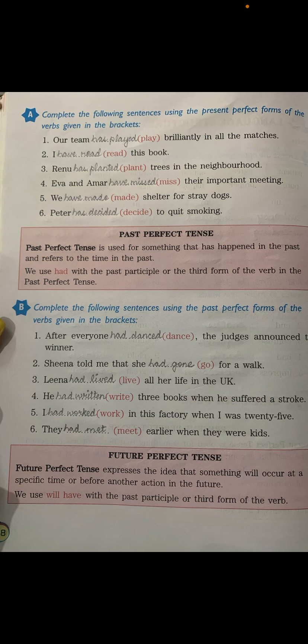Now let's come to Past Perfect Tense. Past Perfect Tense is used for something that happened in the past and refers to a time in the past — meaning the work started in the past and also ended in the past. We use 'had' to show completion of work in the past. Wherever completion of work is shown, perfect tense is used.